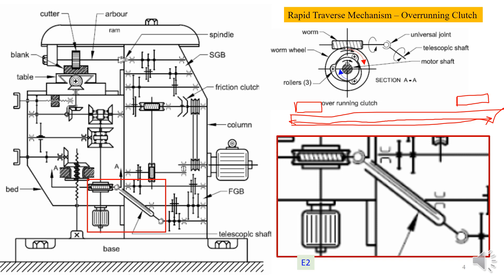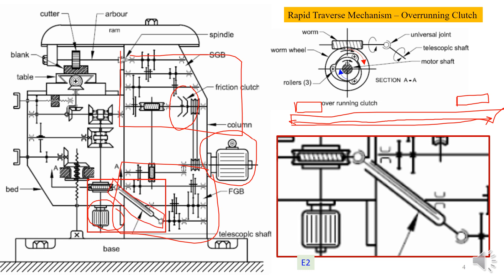The most important elements are: how feed reversal is done, where is your speed gearbox, that there is a friction clutch, and primarily there is only one motor — the second motor is only for rapid traversing. There is a telescopic shaft with universal joint, and an overrunning clutch for implementing the rapid traverse mechanism. These are the key features of the kinematic diagram of a milling machine.